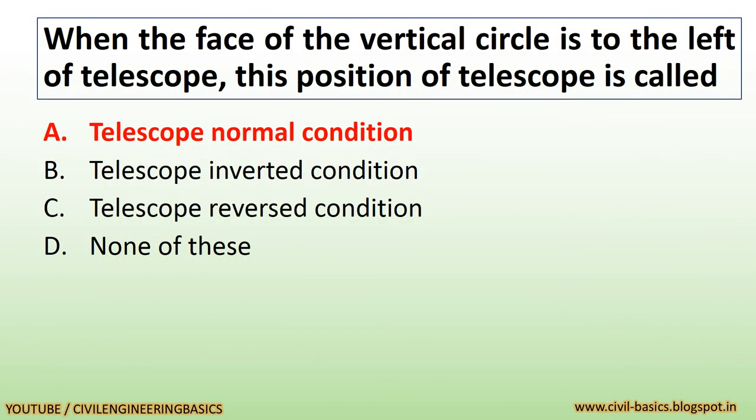When the face of the vertical circle is to the left of the telescope, this position of the telescope is called telescope normal condition. The axis of telescope is a line joining the optical center of the object glass and the center of the eyepiece.